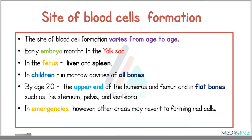The site of the formation of these blood cells varies from age to age. During the embryonic period, the yolk sac is the principal site of blood cell formation. In the fetal period, the liver and the spleen take over, and in children, blood cell formation takes place in all bones.